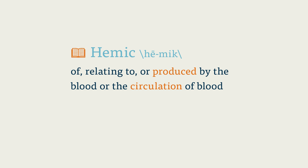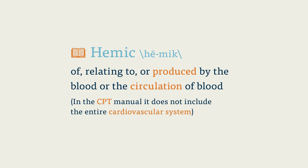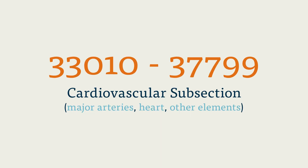The word hemic means blood, but the hemic system, at least in the CPT manual, does not include the entire cardiovascular system. Codes for the major arteries, heart, and other elements of that system are found in the cardiovascular subsection, numerical range 33010 to 37799.